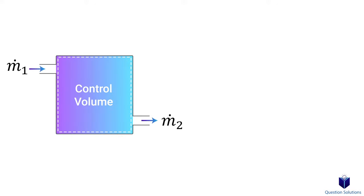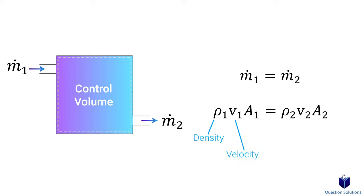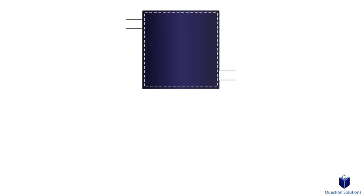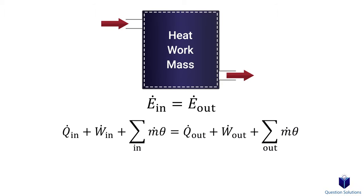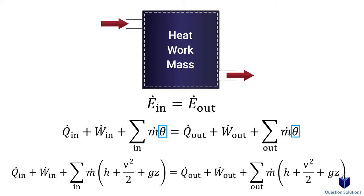For a system with a single stream — one entrance and one exit — we can write a mass balance equation. Each mass flow can be found by multiplying the density by the average velocity by the cross-sectional area normal to the flow direction. During a steady flow process, the amount of energy entering a control volume must equal the amount leaving. We can write that for heat, work, or mass, and expand the equation using the theta symbol, which represents the energy of a flowing fluid.